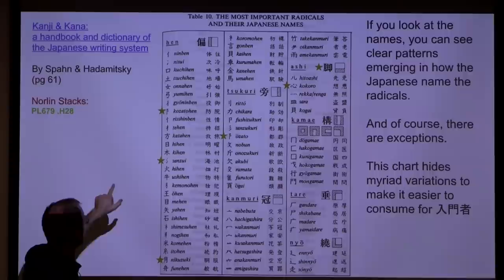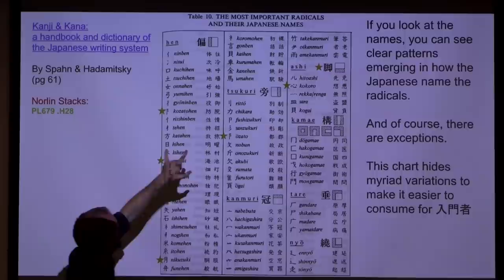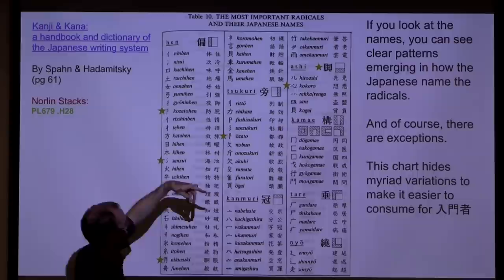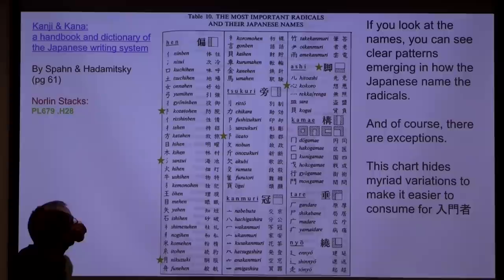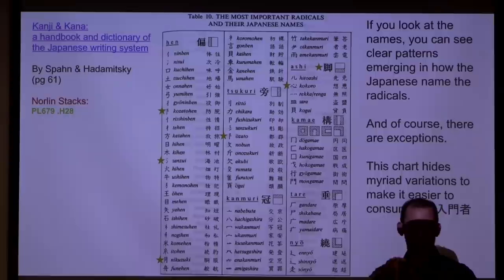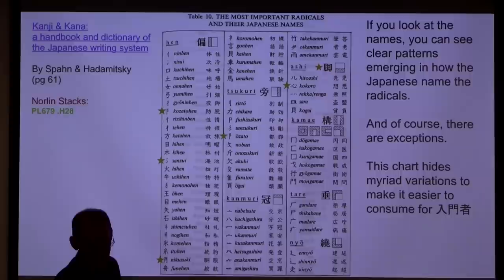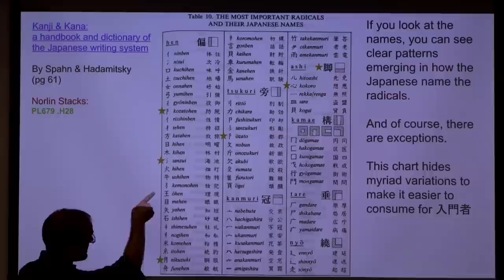For 'ashi,' notice it says 'hito-ashi' — the names don't follow a particular pattern: hito-ashi, kokoro, rekka, renga, sara, and kogai. Remember when I said ashi isn't the foot kanji? For those further along, you'll see that's a totally different ashi you've never seen before. In Japanese speech, 'ashi' doesn't distinguish between your foot or your leg, but the kanji do. The kanji you learn in Japanese 101 is foot, but that other kanji refers to the leg itself.